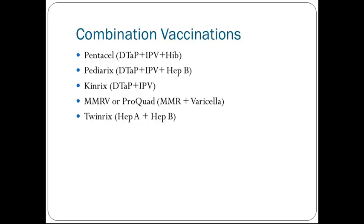Combination vaccinations include Pentacel, which combines DTaP, IPV, and Hib; Pediarix, which combines DTaP, IPV, and Hepatitis B; MMRV or ProQuad, which combines MMR and Varicella; and Twinrix, which combines Hepatitis A and Hepatitis B. The reason combination vaccinations have become more prevalent is to reduce the number of injections a child needs. However, even with combination vaccinations, we are sometimes giving three or four injections at one visit, especially when children are going off to school, where four or five injections may be given.